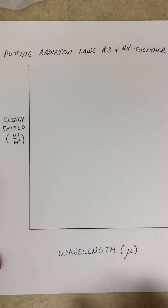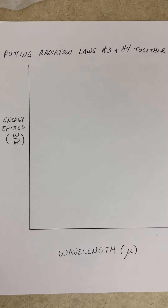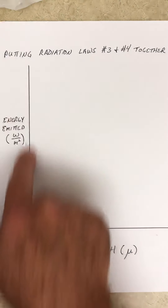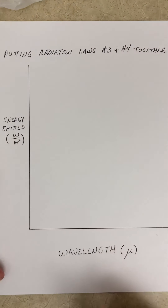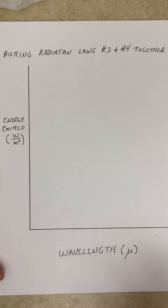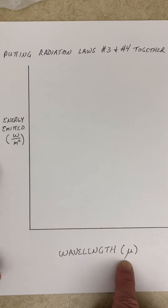Hi class. I want to draw a figure for you that will hopefully put radiation laws 3 and 4 together and really help you figure out exactly what we're talking about with these two radiation laws. What I want to draw is an XY plot where the y-axis is the energy emitted by an object, and we're going to look at the Sun and the energy emitted as a function of wavelength.